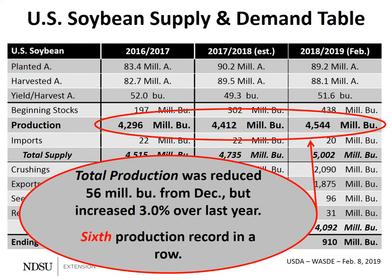If you multiply the harvested acreage times the national average yield, you'll get the estimate or forecast for total production — approximately 4.5 billion bushels. Total production was reduced 56 million bushels from the December report, but is still a 3% increase over last year's numbers. This represents the 6th record production year in a row for U.S. soybeans.